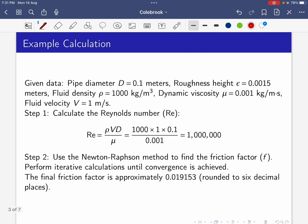Given data: pipe diameter D = 0.1 meters, roughness height ε = 0.0015 meters, fluid density ρ = 1000 kg/m³, dynamic viscosity μ = 0.001 kg/(m·s), and fluid velocity V = 1 m/s.